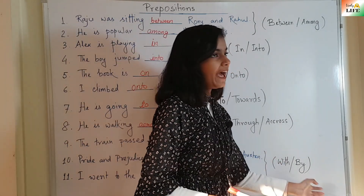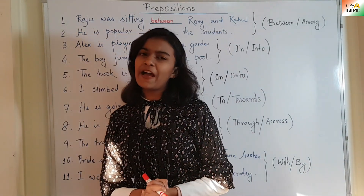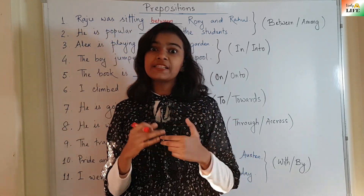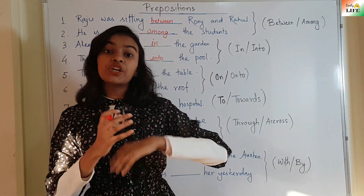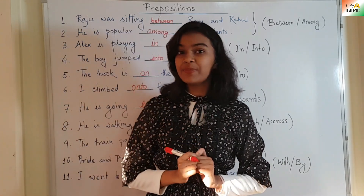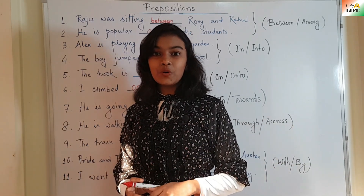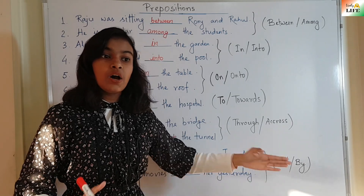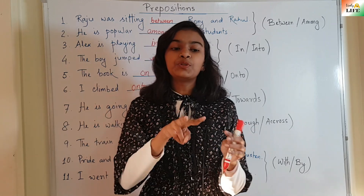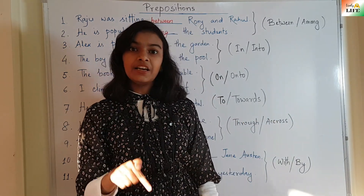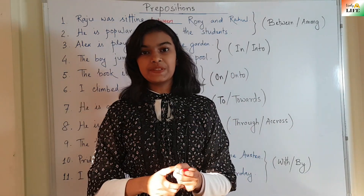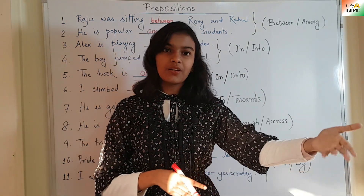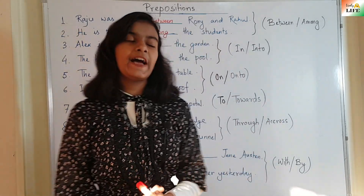The last pair is 'with' and 'by'. The difference between them is actually very simple. We use 'by' when something is created by someone. This cake is made by me. This show is organized by her. We use 'by' when something is made or created by someone. But we use 'with' when we do something together with someone. Suppose two people do something together — she did that with her. When something is created by someone, we use 'by'. When someone does something with someone, we use 'with'.